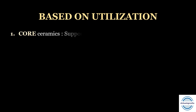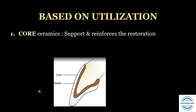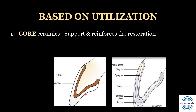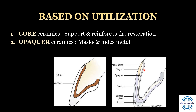The next classification is based on utilization or function of the ceramic. First is the core ceramic — it supports and reinforces the restoration. In the all-ceramic crown, it contains a core and a veneer over it. Second are the opaquer ceramics. In a metal-ceramic crown, over the metal frame, the opaquer is added. Its function is to mask and hide the metal.